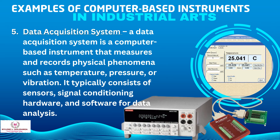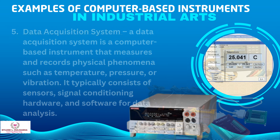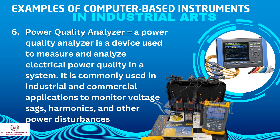5. Data acquisition system — a computer-based instrument that measures and records physical phenomena such as temperature, pressure, or vibration, typically consisting of sensors, signal conditioning hardware, and software for data analysis. 6. Power quality analyzer — a device used to measure and analyze electrical power quality in a system, commonly used in industrial and commercial applications to monitor voltage sags, harmonics, and other power disturbances.